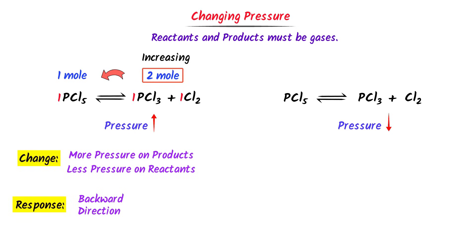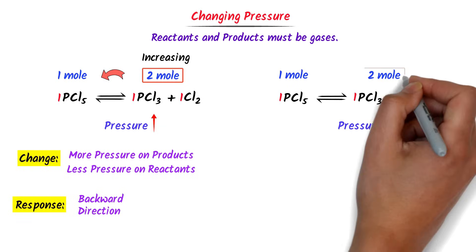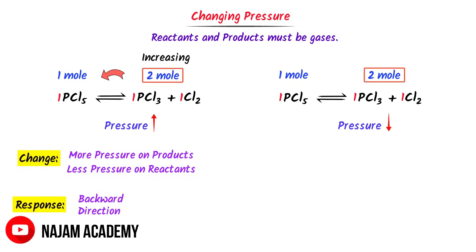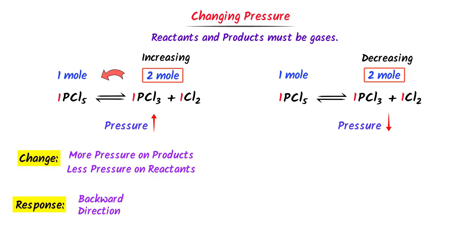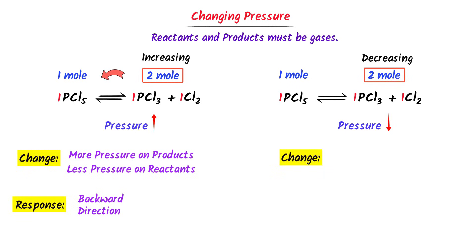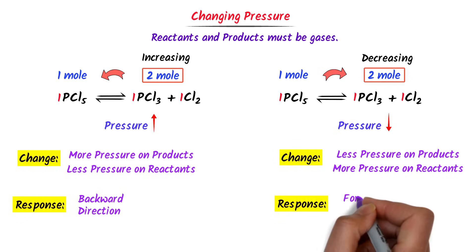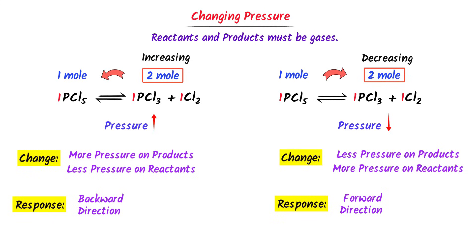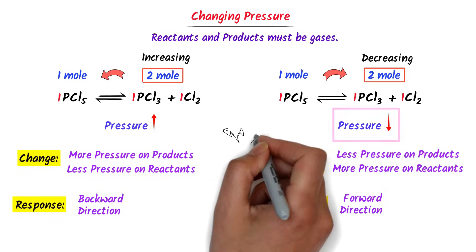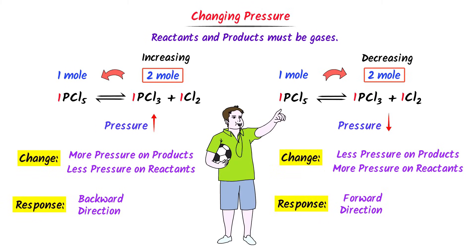Secondly, in this case, we already know that there is one mole of reactants and two moles of products. We only consider the larger number, which is 2. When we decrease the pressure, it means we are decreasing the number of 2 moles further and putting less pressure on products. The change is less pressure on products and more pressure on reactants. The response will be that equilibrium will proceed in the forward direction to counter the effect of pressure. Therefore, decreasing pressure means that equilibrium will shift in the forward direction. Using this simple trick, we can easily calculate the effect of change of pressure on chemical equilibrium.